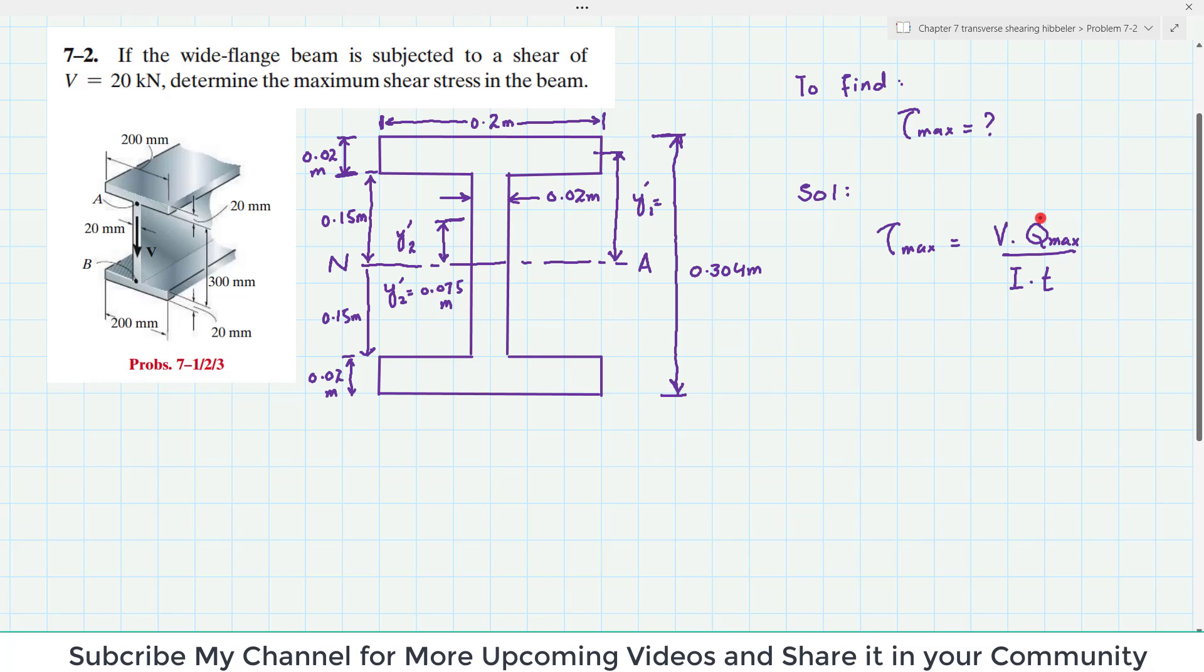Where V is the shear force, Q is the first moment of inertia of the section above or below the neutral axis, I is the second moment of inertia of whole cross section, T is the thickness. What we have in the given statement, we have V and T as well from this figure. But we do not have Q max and I.